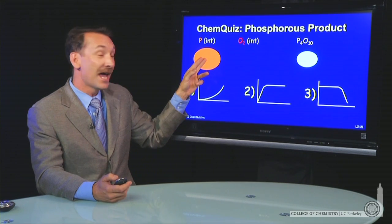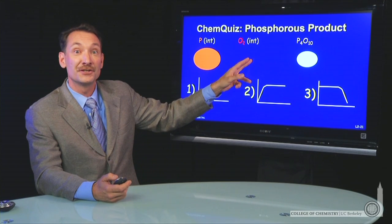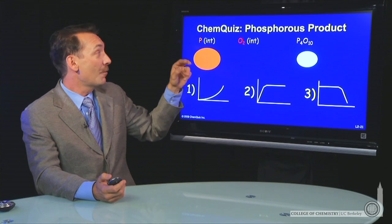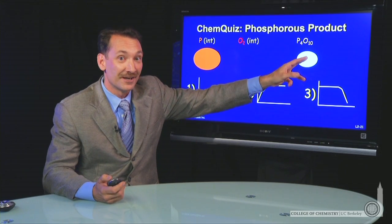And you can see if you keep adding phosphorus, you'll eventually get to a point where all the initial oxygen is used up. And it won't matter how much more phosphorus you add, you cannot produce any more phosphorus oxide.